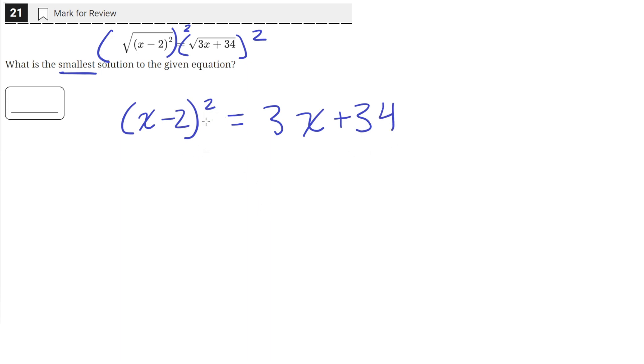So now let's expand out this squared term. So we'll be left with x squared minus 4x plus 4, and then we'll have 3x plus 34 on the right.